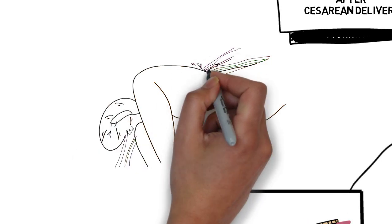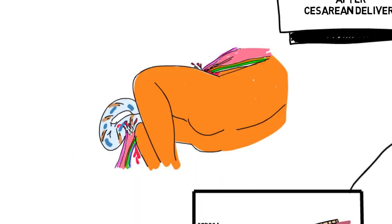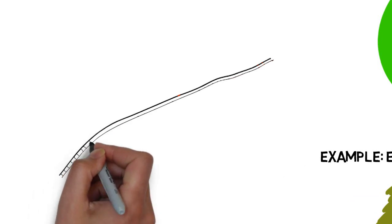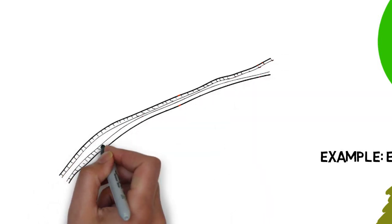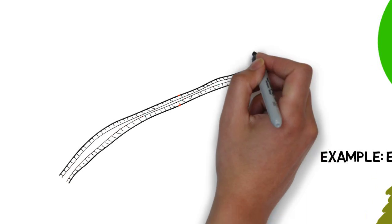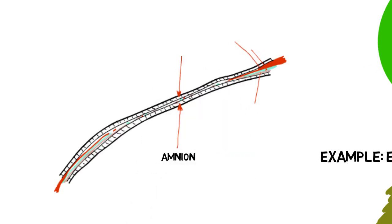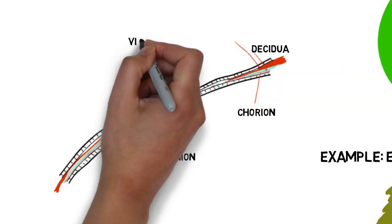Fetal extrusion is a subset of ruptures in the same way evisceration is a subset. It requires disruption of all layers. Dehiscence of the myometrial closure without disruption of the amnion and visceral peritoneum is commonly referred to as a window with two transparent layers intact but allowing viewing of the fetus.